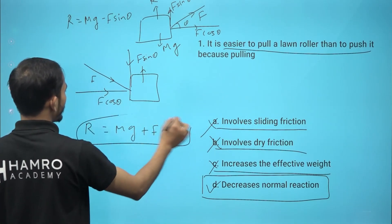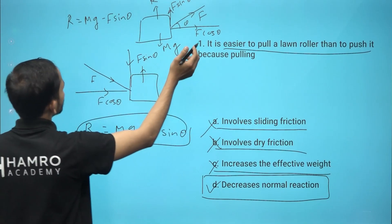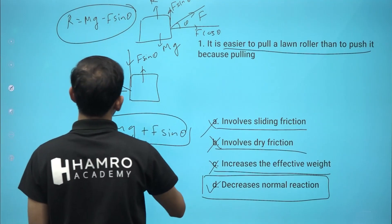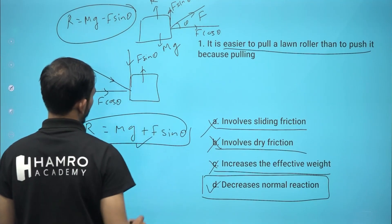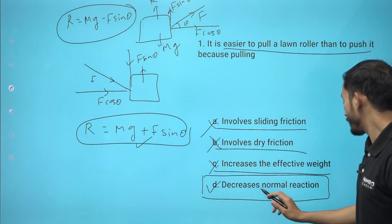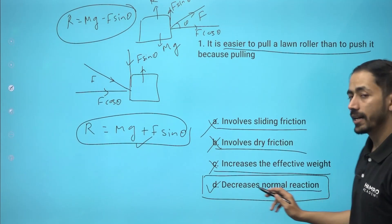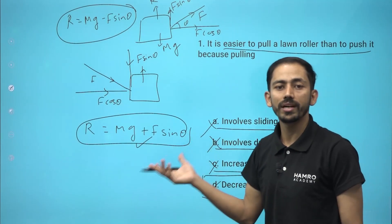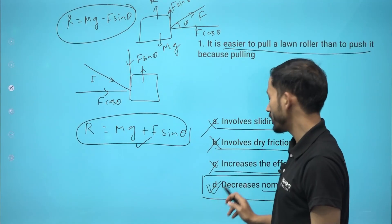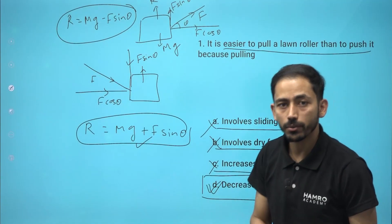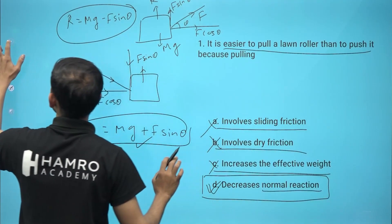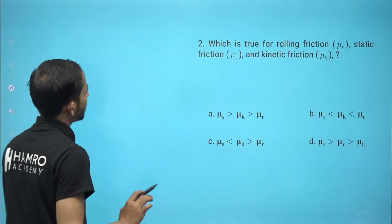So in the case of pulling, the normal reaction decreases, which reduces the effective weight. That is why pulling is easier than pushing a lawn roller. This is the key concept for this question.